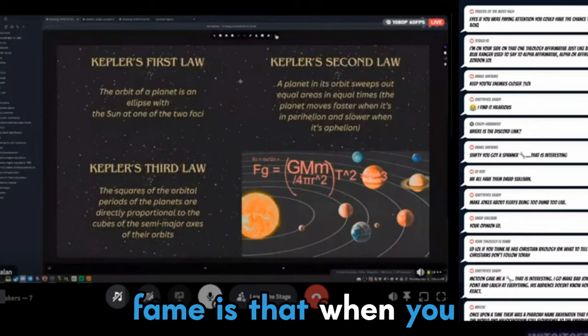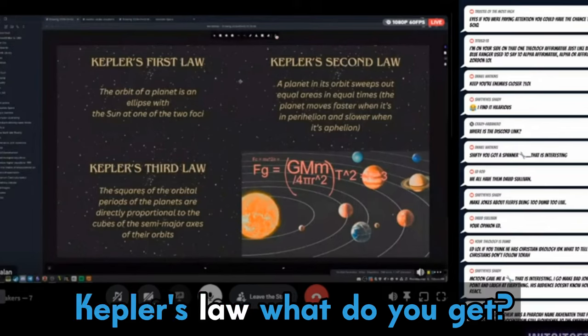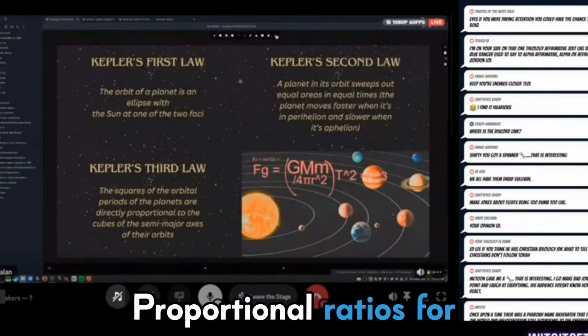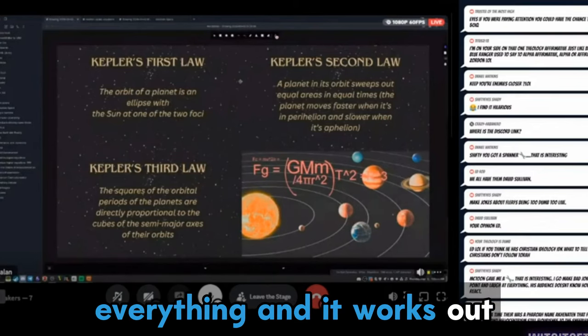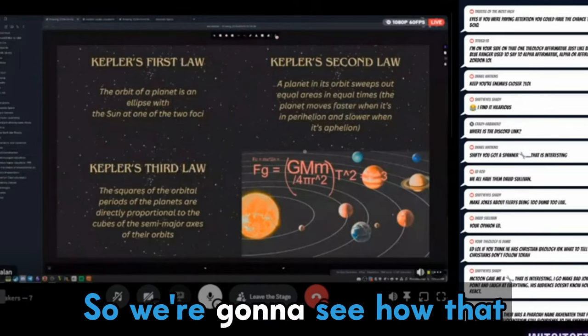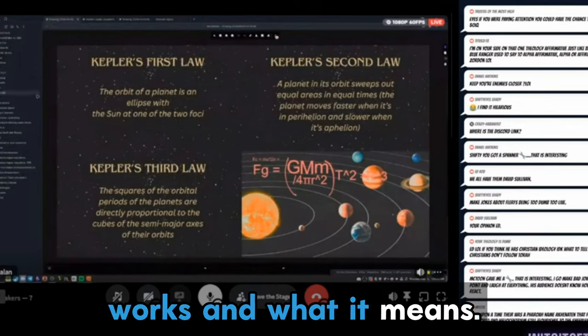Because the big claim to fame is that when you apply Newton's equations to Kepler's law, what do you get? Proportional ratios for everything and it works out based on mass attracting mass. So we're going to see how that works and what it means.